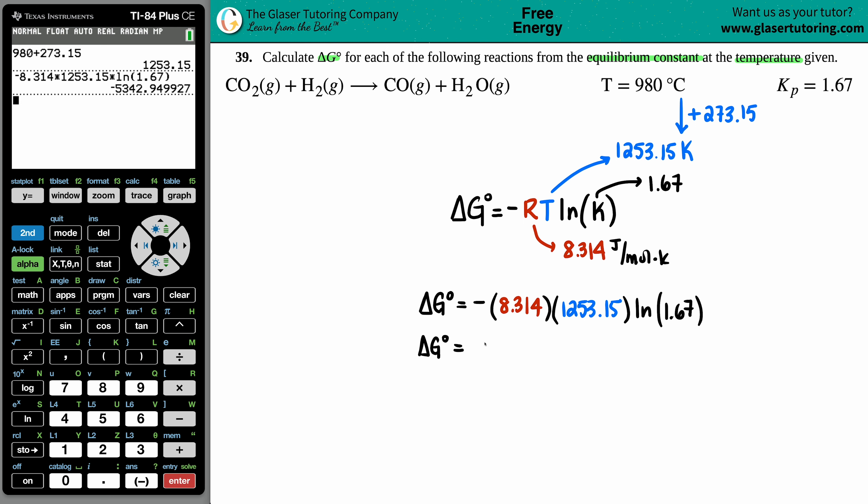Negative 5342.9, and this would be in units of joules per mole because those were the two units that were not canceled. Keep in mind the Kelvin was canceled and the equilibrium constant never has any units.